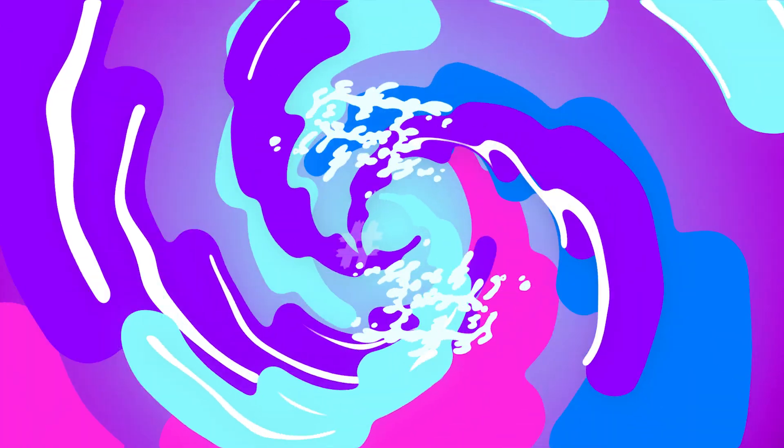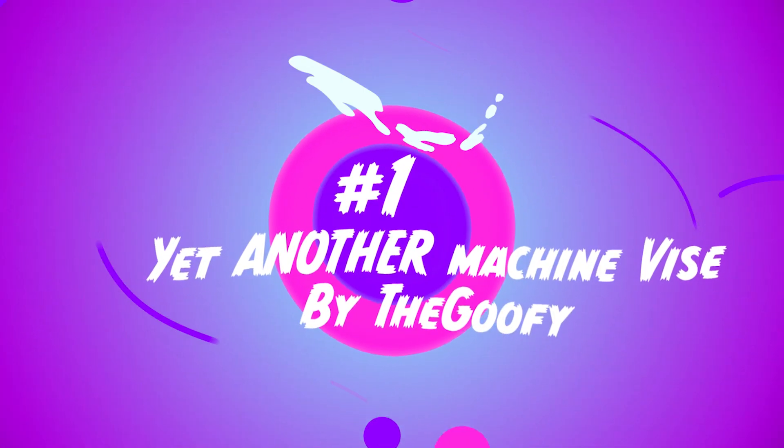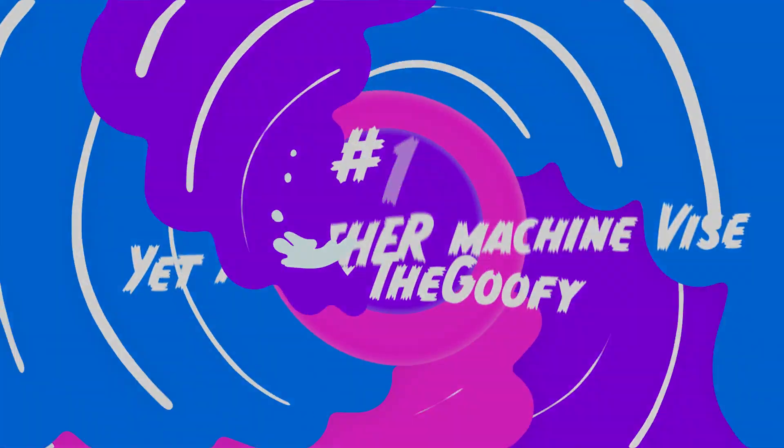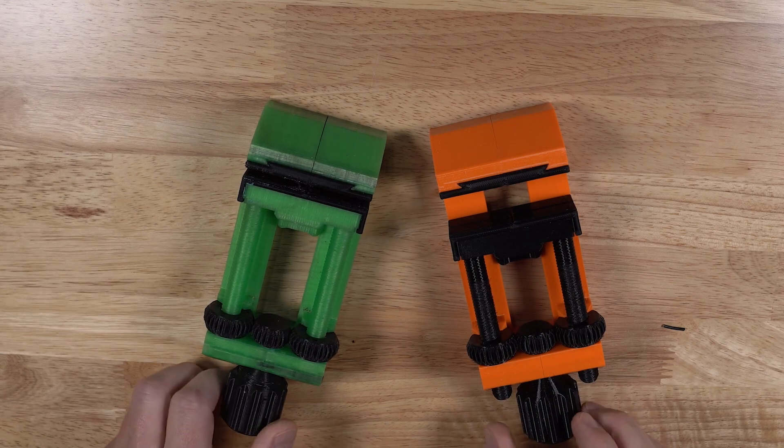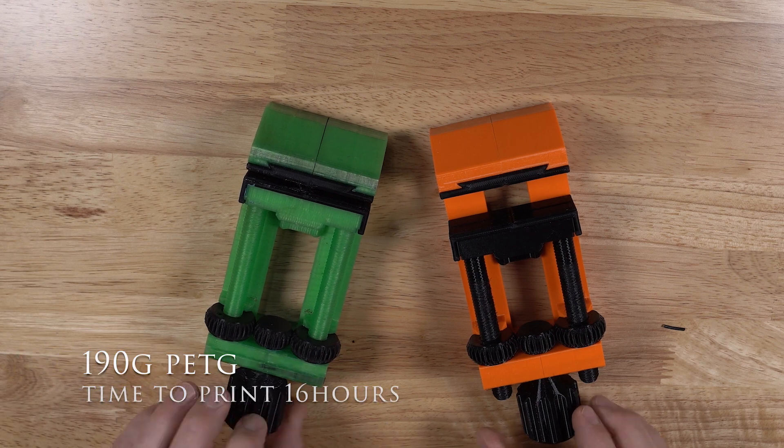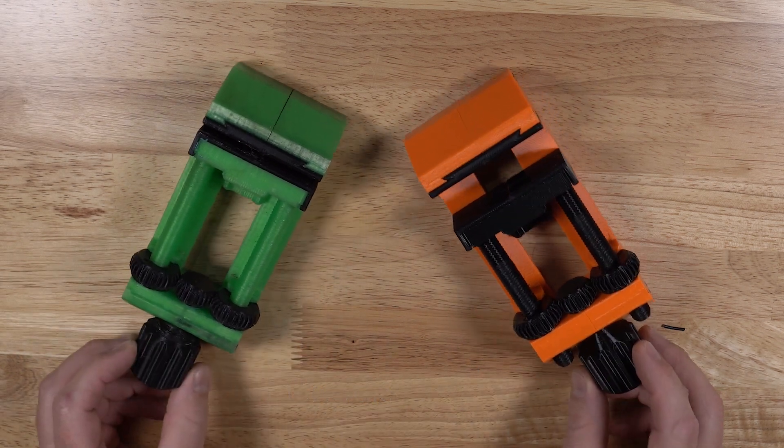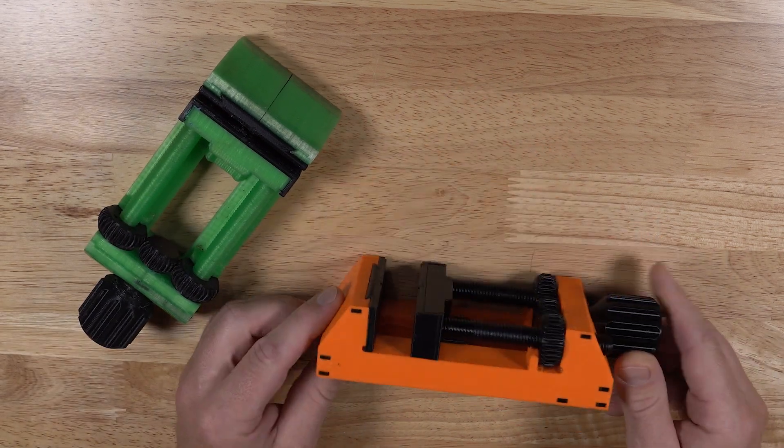And number one, by far without a doubt, is this guy here. This is Yet Another Machine Vise by TheGoofy. 190 grams of filament, takes about 16 hours of print. There are lots of different pieces here. This is an entirely 3D printed bench vise.